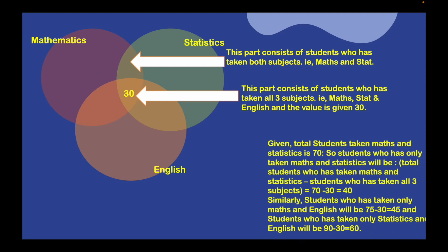The total students who took both Mathematics and Statistics is 70. To find how many took only Mathematics and Statistics — excluding those who also took English — we subtract the students who took all 3 subjects: 70 minus 30, which equals 40.